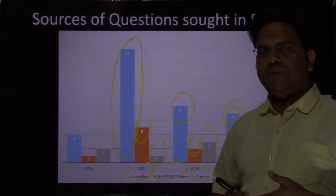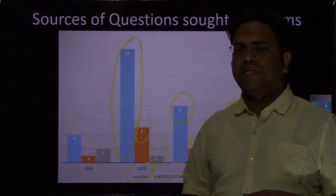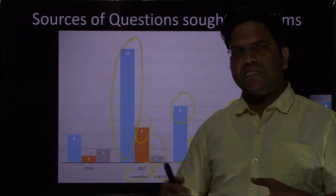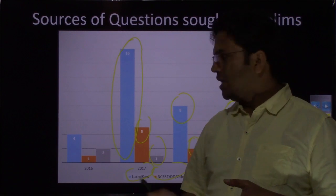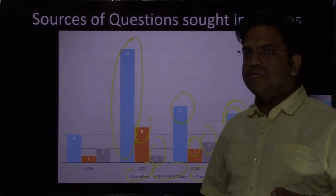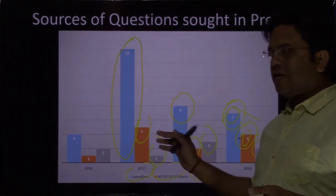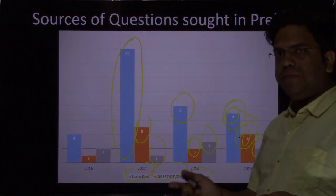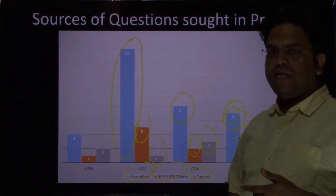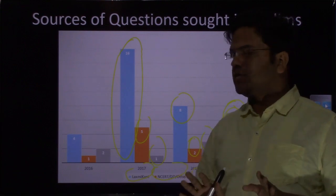I acknowledge that a trade-off has to be made — without that trade-off I cannot say that all things have been read. Here I am saying: I will not suggest that apart from Lakshmikant you also read DD Basu separately. But NCERT should not be ignored. That is my suggestion.